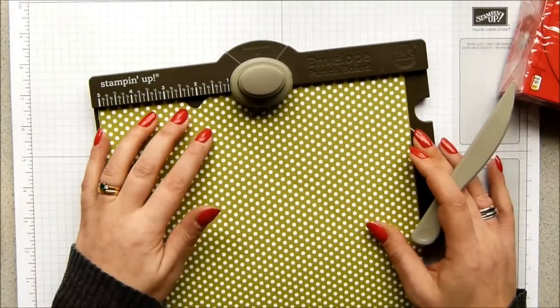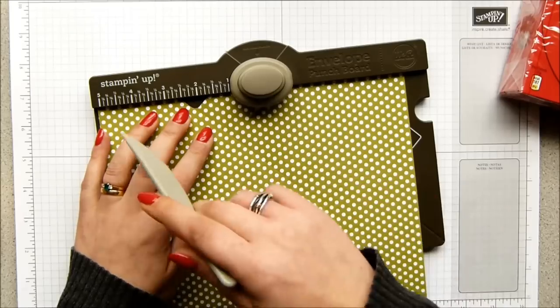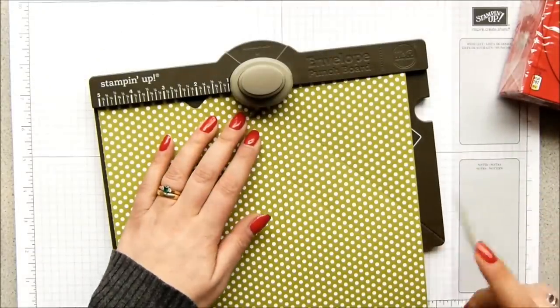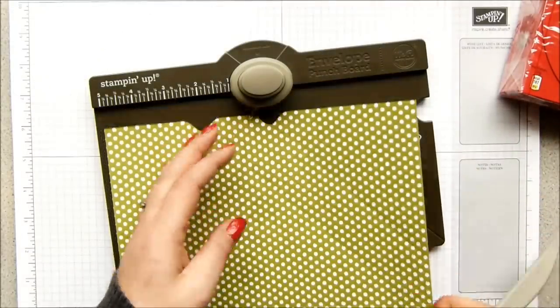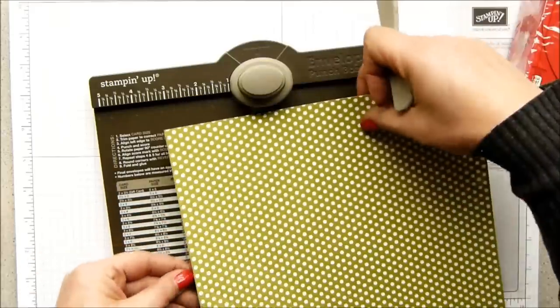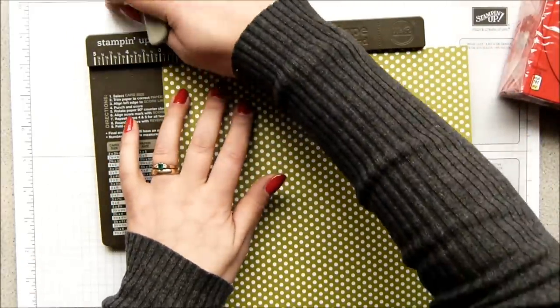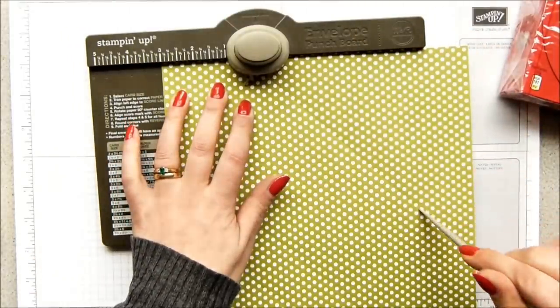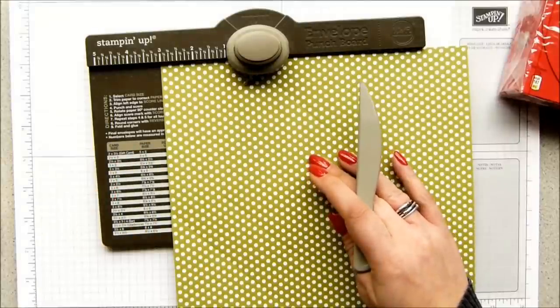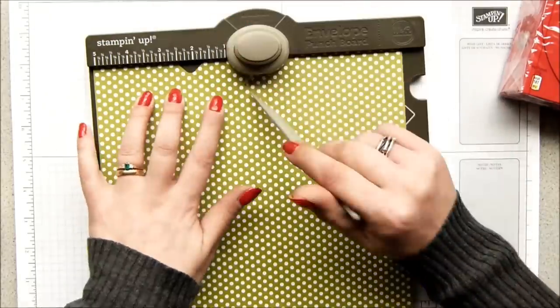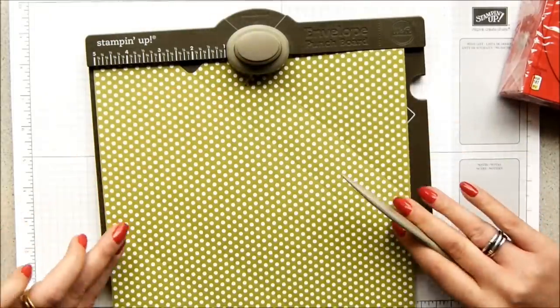The first one is seven and a half centimeters and 13.1, so five and an eighth punch and score. And then you turn it, not once but twice, and come in and do the same again. So you punch and score at three inches, and I'll turn my phone off so it doesn't chirp at me.